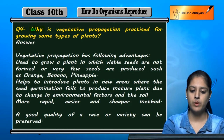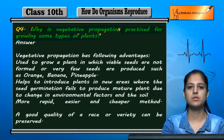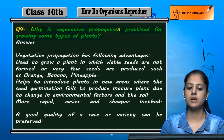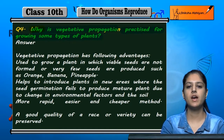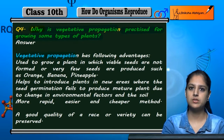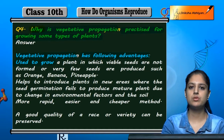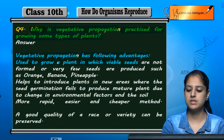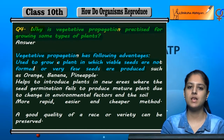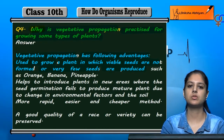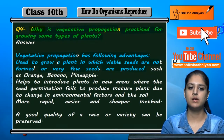Why is vegetative propagation practiced for growing some types of plants? What are its importance and advantages? Vegetative propagation has some advantages. First, it is used to grow a plant in which viable seeds are not formed and very few seeds are produced. There are some plants that produce little seeds. For those types of plants, we use vegetative propagation.